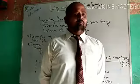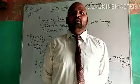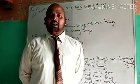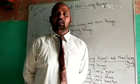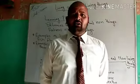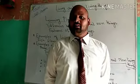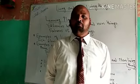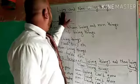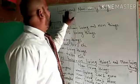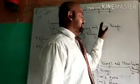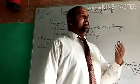अब यह हम लोग जानते हैं। तो हमारे nature में अलग-अलग प्रकार के चीज होते हैं, उनको broadly दो part में categorize किया गया है — एक को living thing में और दूसरे को non-living thing में। Living things क्या होते हैं?